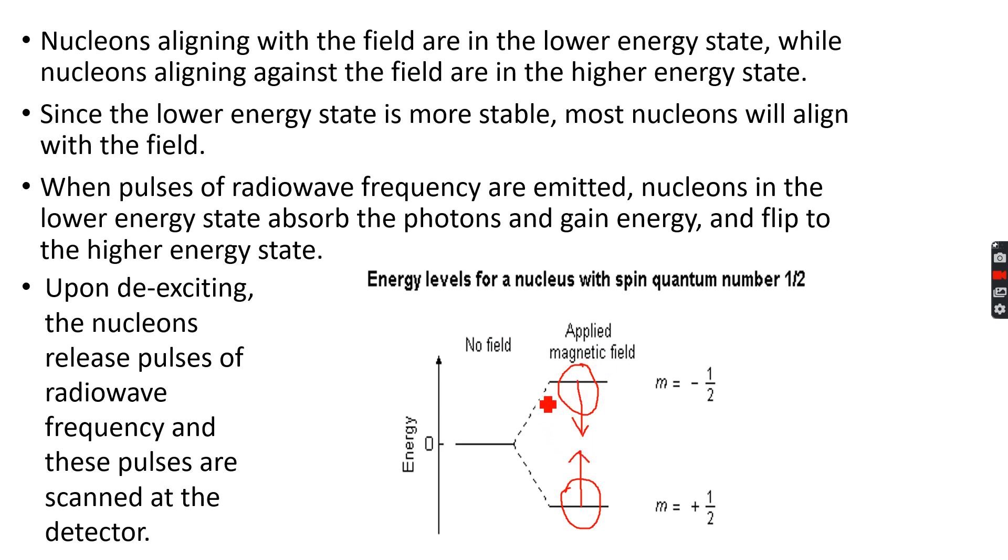So when I deliver radio wave pulses of different frequencies, there is a particular frequency that this particular nucleon absorbs and it flips. Because, as we know through quantum mechanics, E is equal to h times ν, where h is Planck's constant and ν is the frequency of the radiation. And this E is the energy of the photon. So the energy gap between these two energy states is E, we can call it delta E. And h is Planck's constant, and ν is the frequency of radiation that this nucleon absorbs.